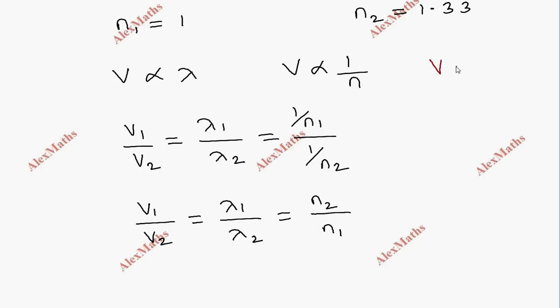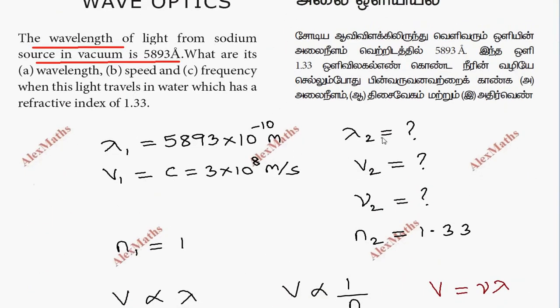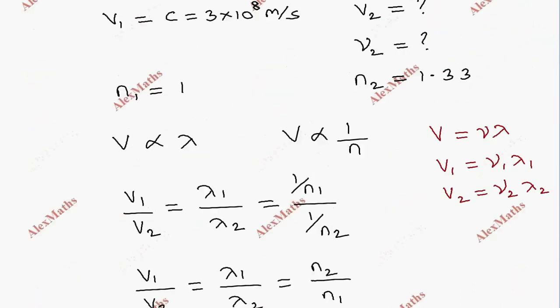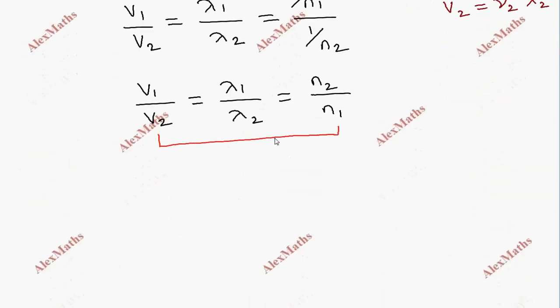Therefore, v1 by v2 equals lambda 1 by lambda 2 equals n2 by n1. We can use this relationship to find lambda 2, v2, and nu 2.